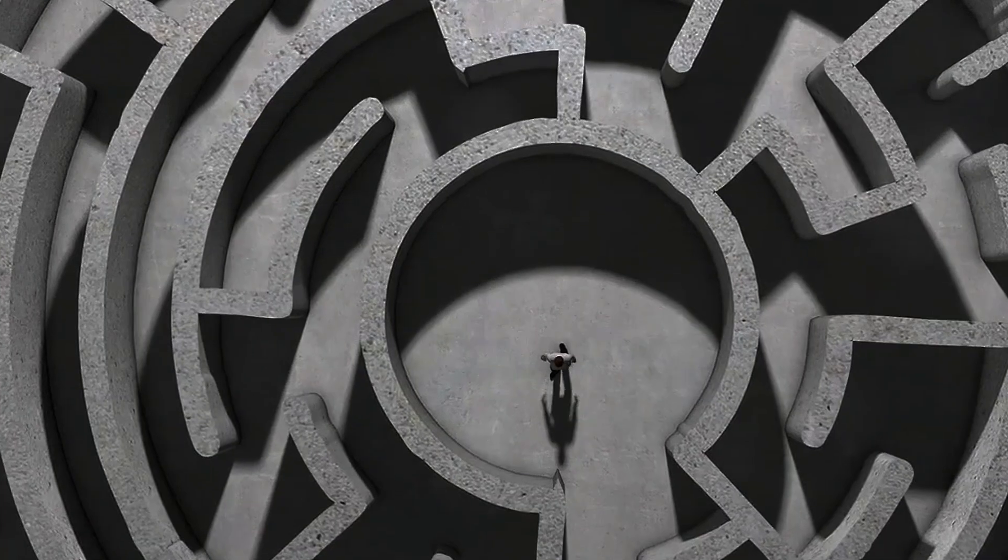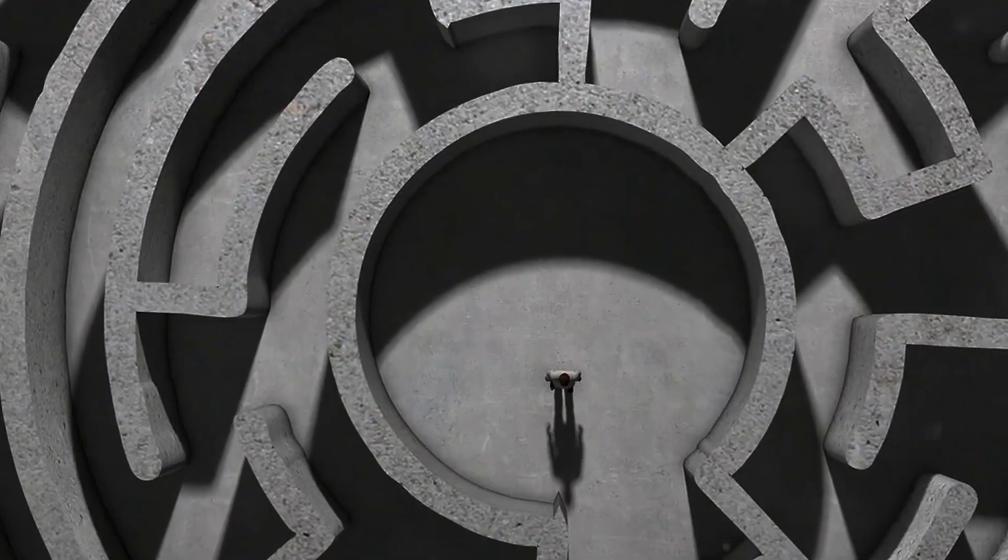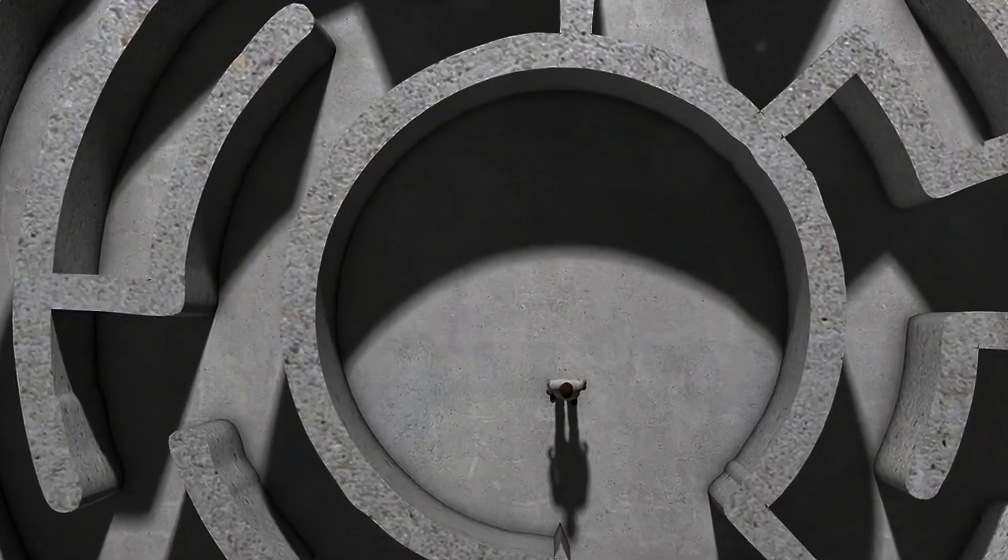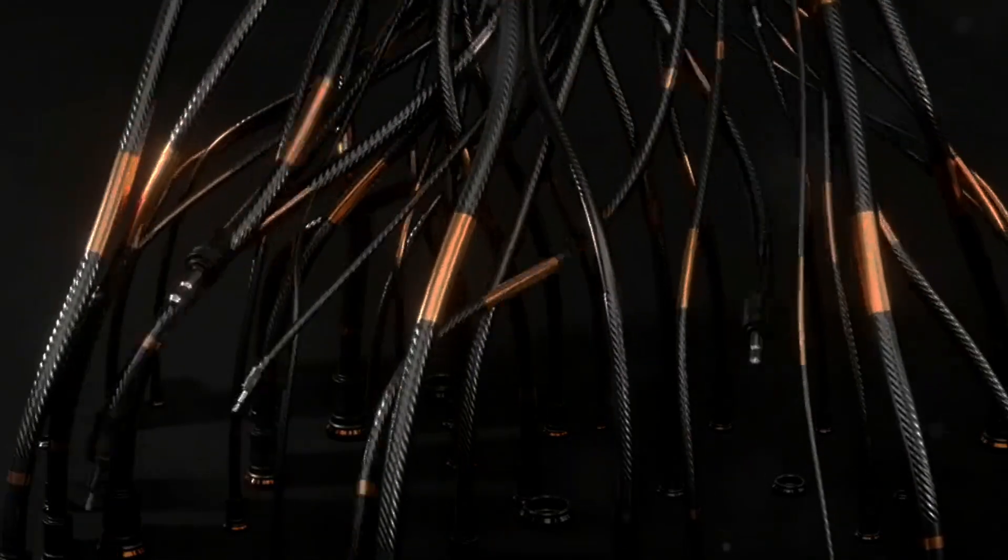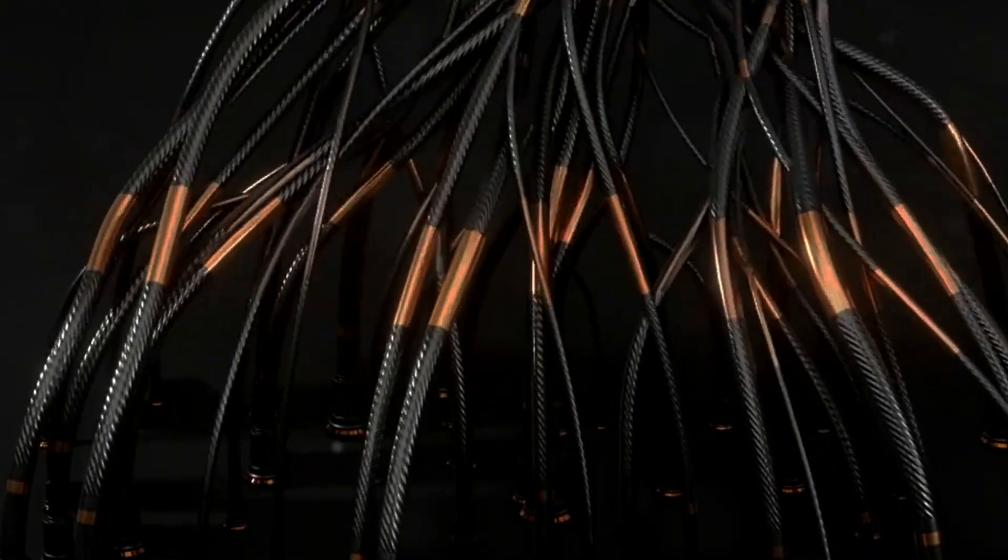Historically, action at a distance was the earliest way scientists explained gravity and electricity. Newton's law of universal gravitation and Coulomb's law of electric forces both rely on this concept. They describe how objects can exert forces on one another even when they're far apart.